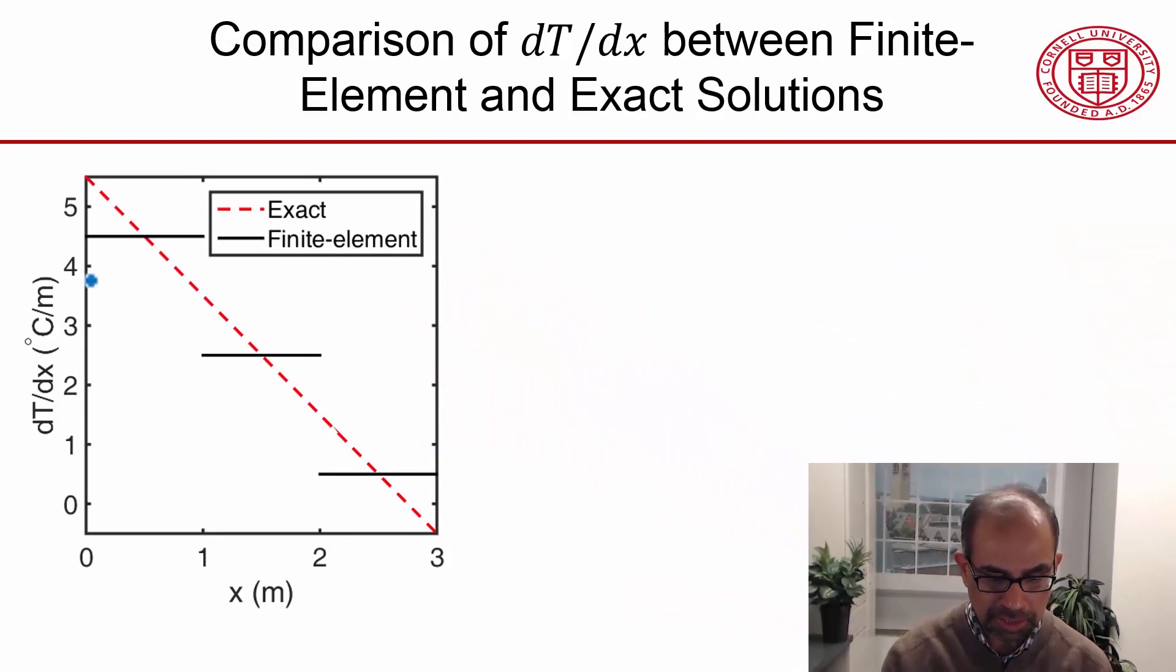This plot shows the comparison. On the vertical axis, I have the derivative of the temperature. On the horizontal axis, I have the distance along the bar. The solid line is the finite element solution. The dashed line, as before, is the exact solution.